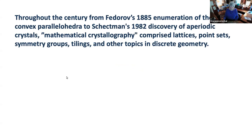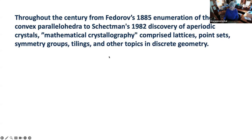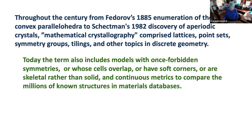So I'll first start here with the abstract, slightly adjusted from what I put on the website before. Throughout the century from Fedorov's 1885 enumeration of the five convex parallelohedra to Shechtman's 1982 discovery of aperiodic crystals, mathematical crystallography comprised lattices and point sets and symmetry groups, tilings, and other topics in discrete geometry. Today, the term also includes models with once-forbidden symmetries or whose cells overlap or have soft corners or a skeletal rather than solid, and continuous metrics to compare the millions of known structures in materials databases.